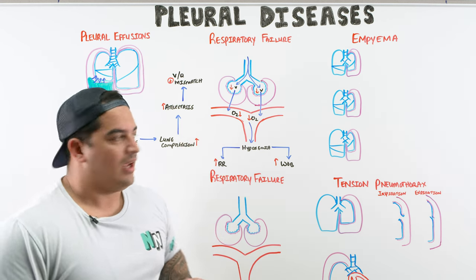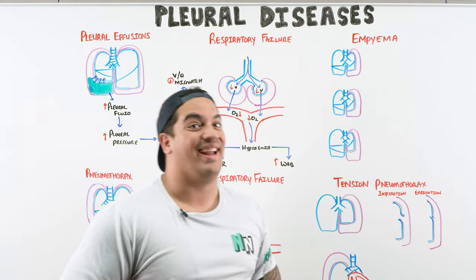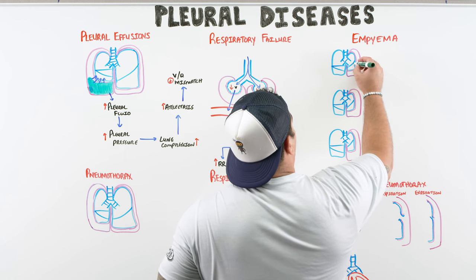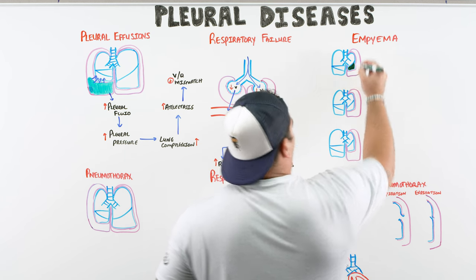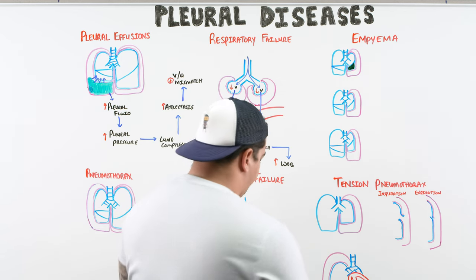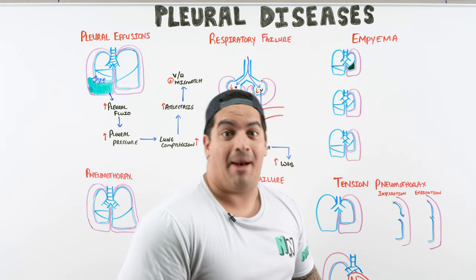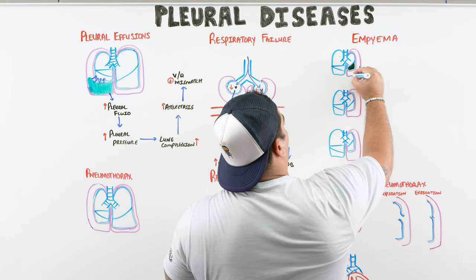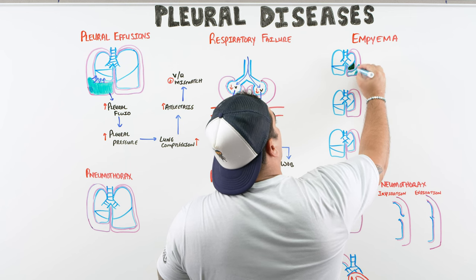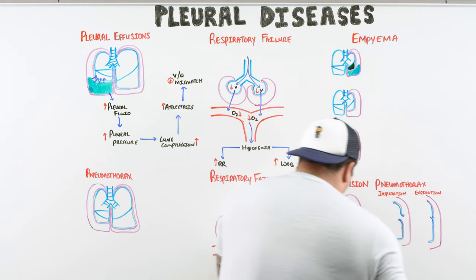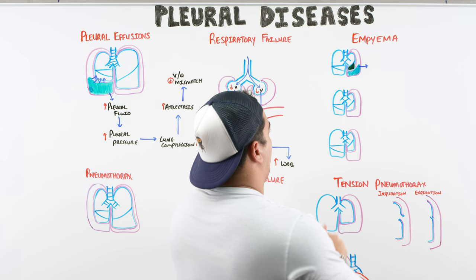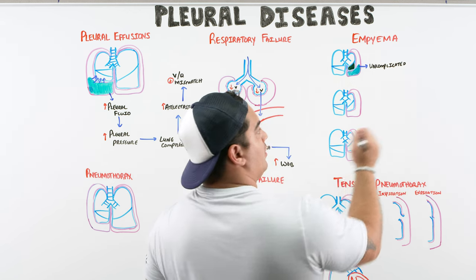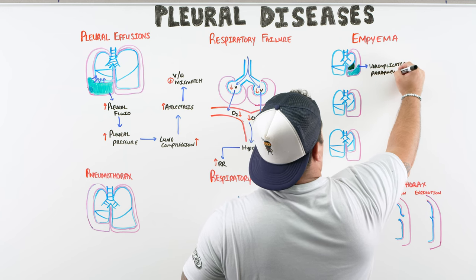Another major complication of pleural effusions is empyema. This is extremely common in patients with pneumonia. A left lower lobe pneumonia causes increased capillary leakage, fluid accumulates in the pleural space — this is called an uncomplicated parapneumonic effusion — which is essentially a standard exudative effusion associated with pneumonia.